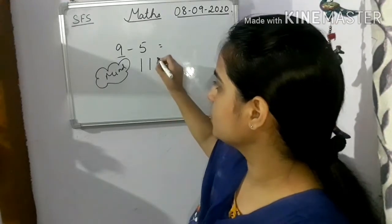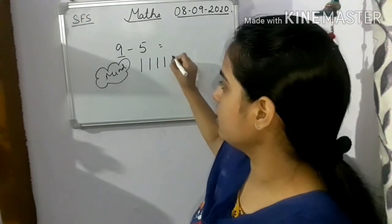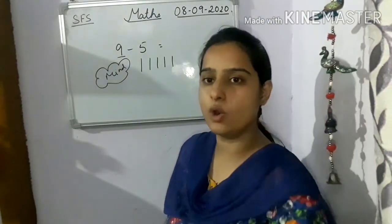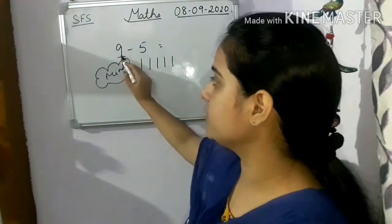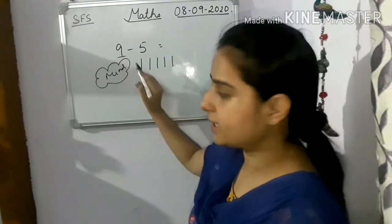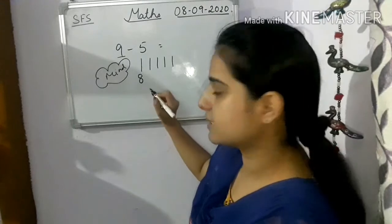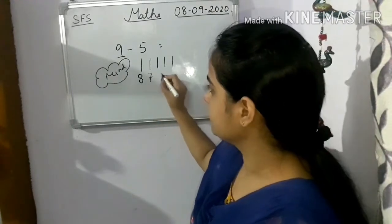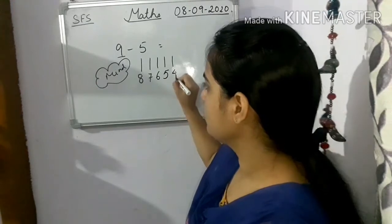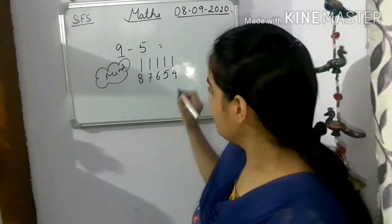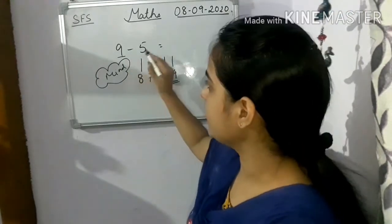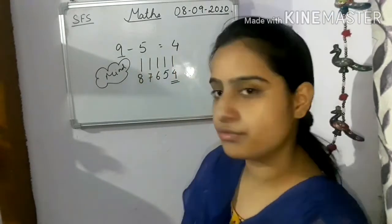1, 2, 3, 4, 5. Okay, 5 fingers we will open. Now children, we will do backward counting. Before 9, what counts? 8, 7, 6, 5, 4. So where it stops children? 4. So 9 minus 5 is what? 4.